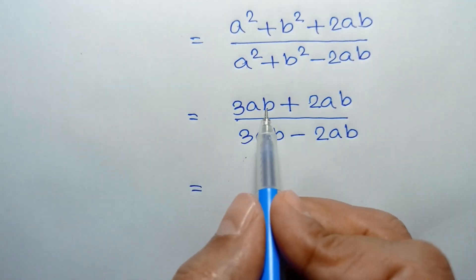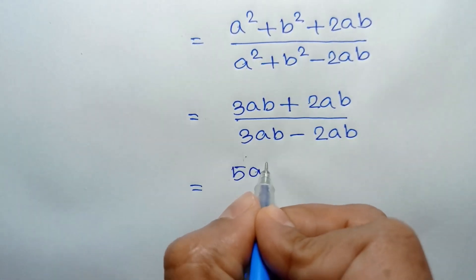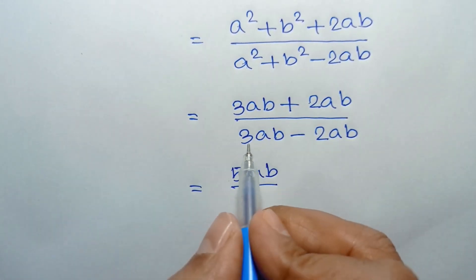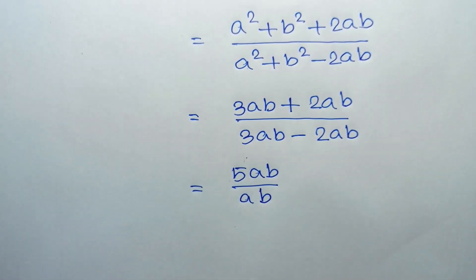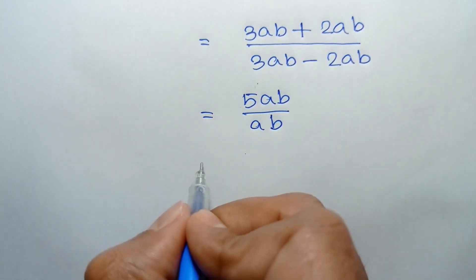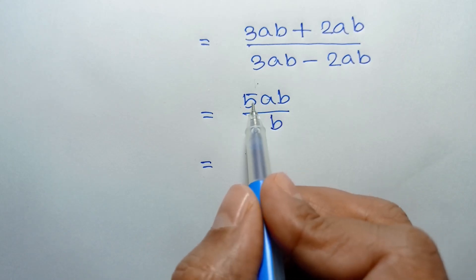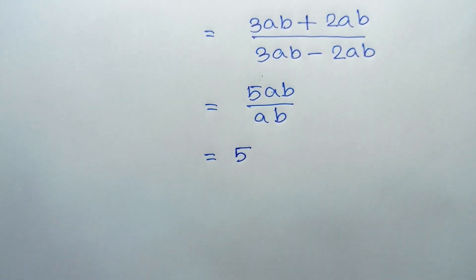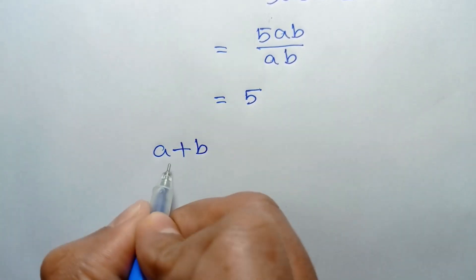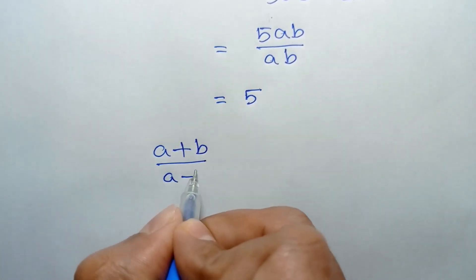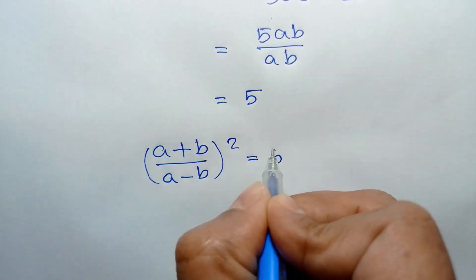So this gives us 5ab over ab, and ab cancels out, leaving 5. Therefore [(a+b)/(a-b)]² = 5.